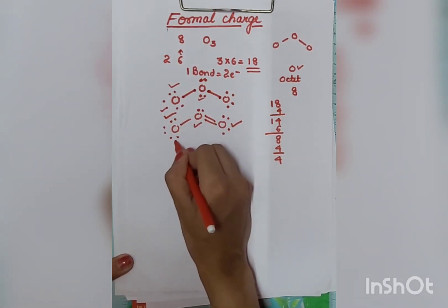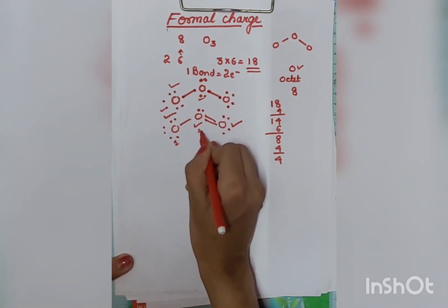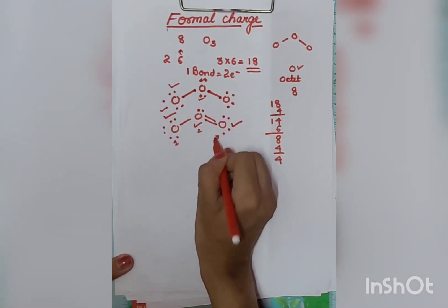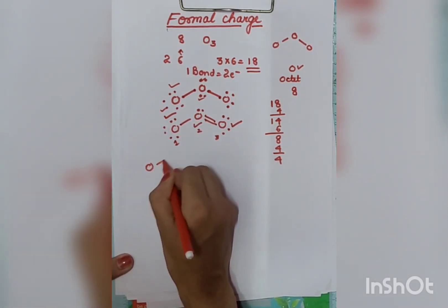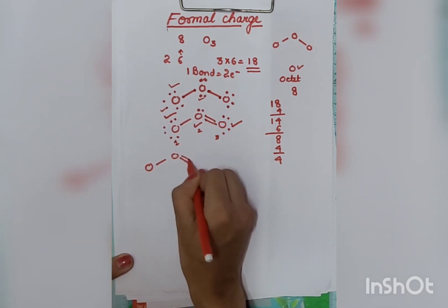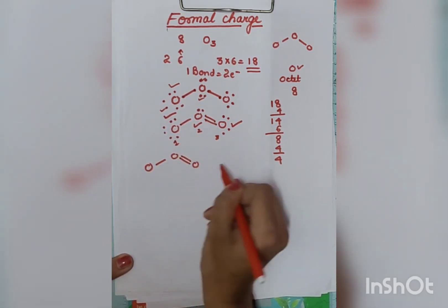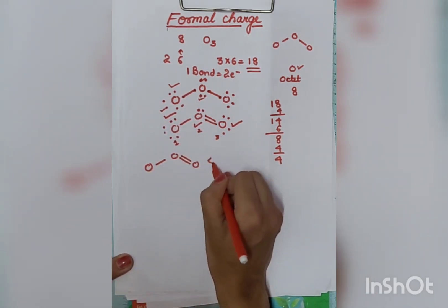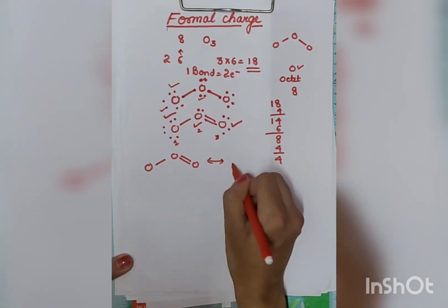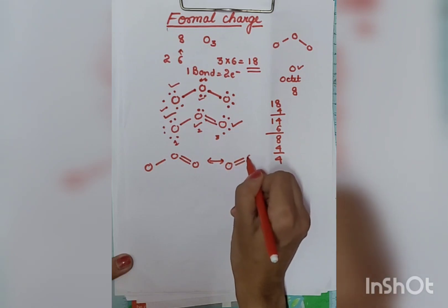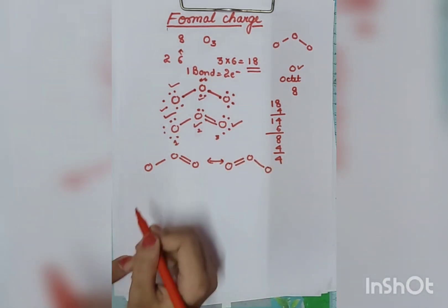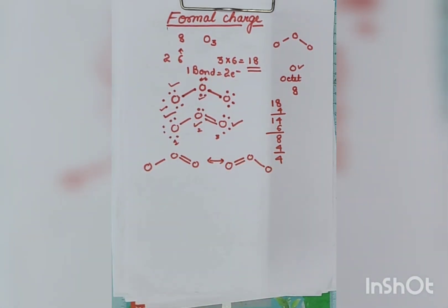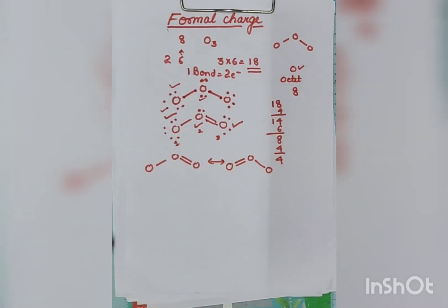Looking at atoms numbered 1, 2, and 3, there is a second possible resonance structure. We can write the double bond on the other side instead. So the double bond can be placed between atom 2 and atom 3 alternatively. That is the same thing — it's a resonance structure. Now let's calculate the formal charge.